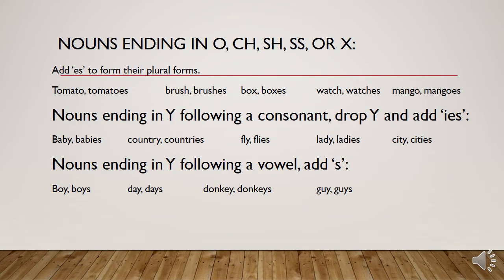Nouns ending in O, CH, SH, SS, or X — we add 'ES' to form their plural forms. For example, 'tomato' ends in O, so we make its plural form by adding 'ES' at the end. We have 'brush', ending in SH, and its plural has 'ES'. Furthermore, we have examples: 'boxes', 'watches', and 'mangoes'.